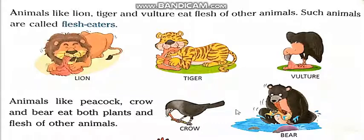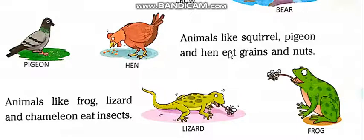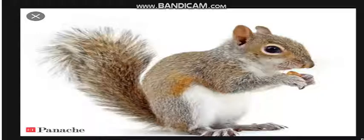These animals like squirrel, pigeon and hen eat grains and nuts. This is hen and this is pigeon. This animal is squirrel. In Urdu it is called glahri.